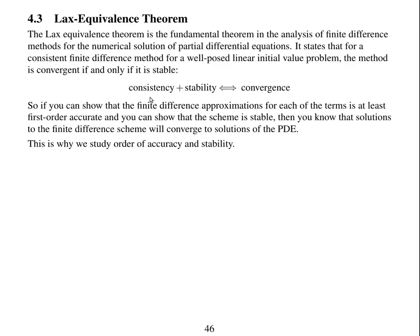So if we can show that a scheme is consistent and stable, then we've proved it's also convergent. We need to prove convergence. So in this course, we're going to spend a lot of time looking at consistency and stability because that's what we need to know. We need to show a scheme must be at least first order accurate and stable.